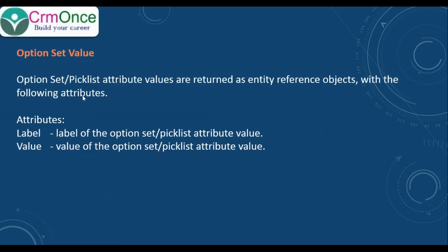For option set values, it returns two attributes: label and value. If you want the label, use dot label; if you want the value, use dot value. This is how we can retrieve these records using the option set attributes.